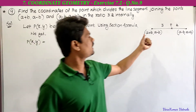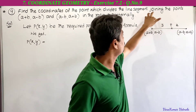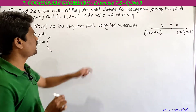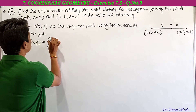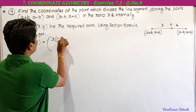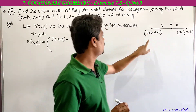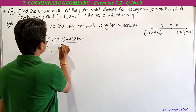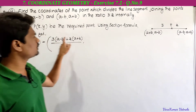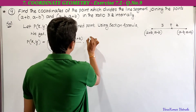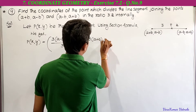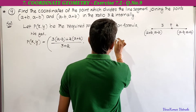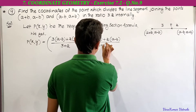Here x1, y1 is (a+b, a-b) and x2, y2 is (a-b, a+b), and m1:m2 is 3:2. Substituting in the formula: x = [3·(a-b) + 2·(a+b)] / (3+2), y = [3·(a+b) + 2·(a-b)] / (3+2).